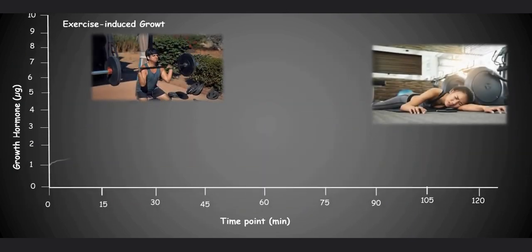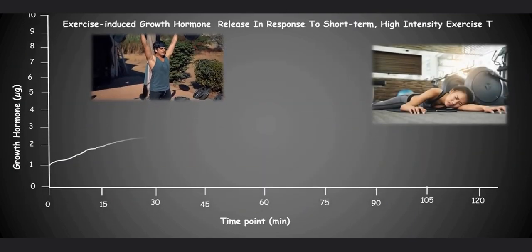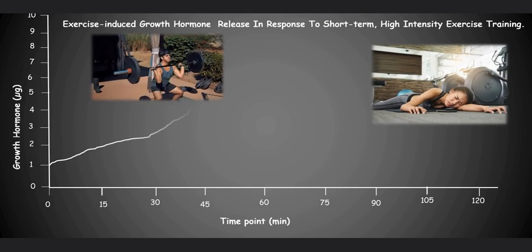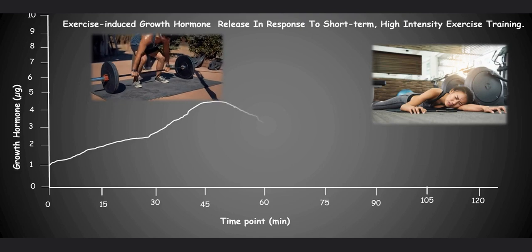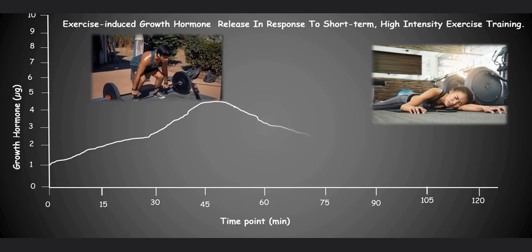Plasma GH concentrations increase within 10-20 minutes of aerobic exercise, peak within the exercise bout or immediately after exercise, and remain elevated above baseline for approximately 2 hours after exercise.